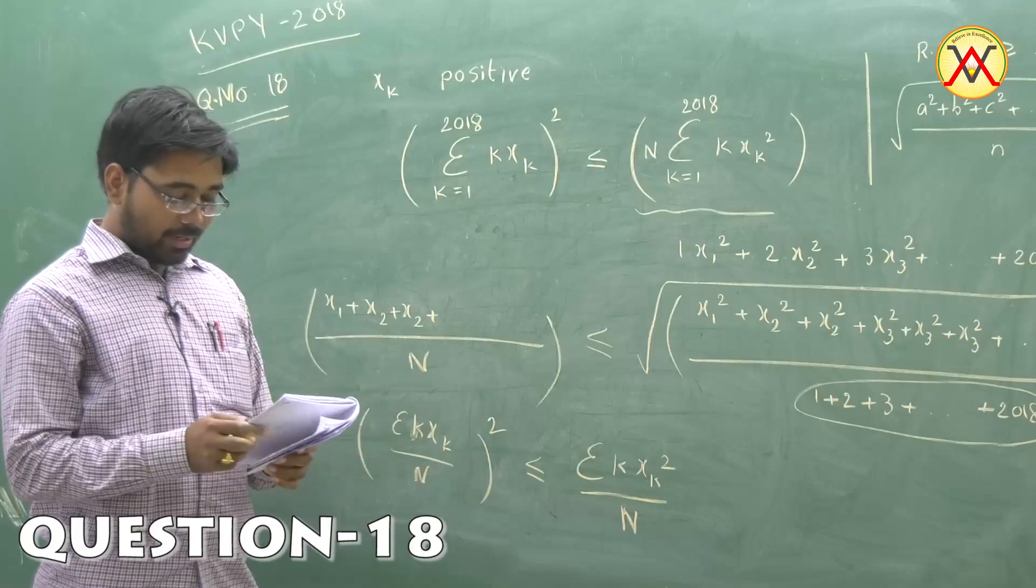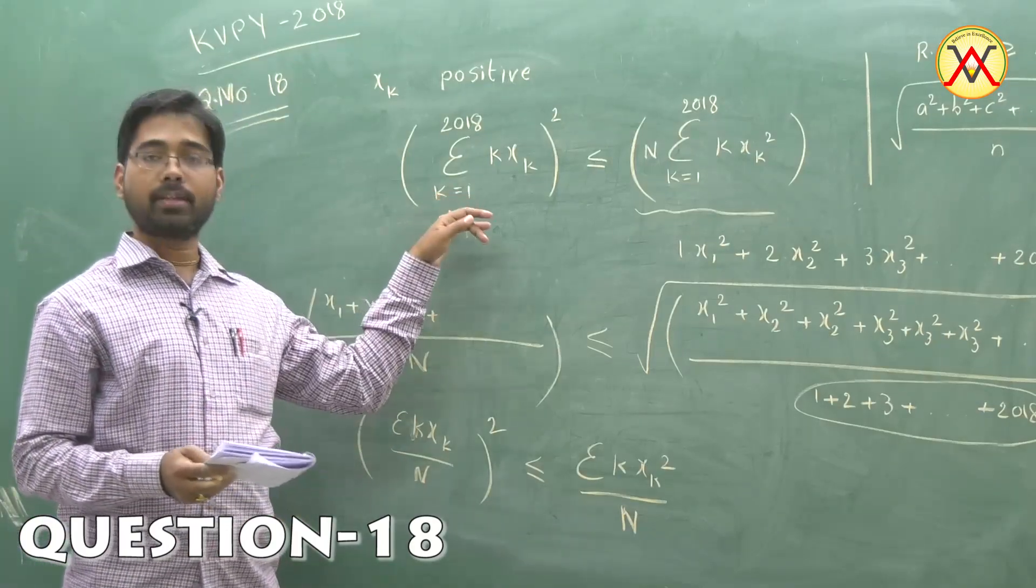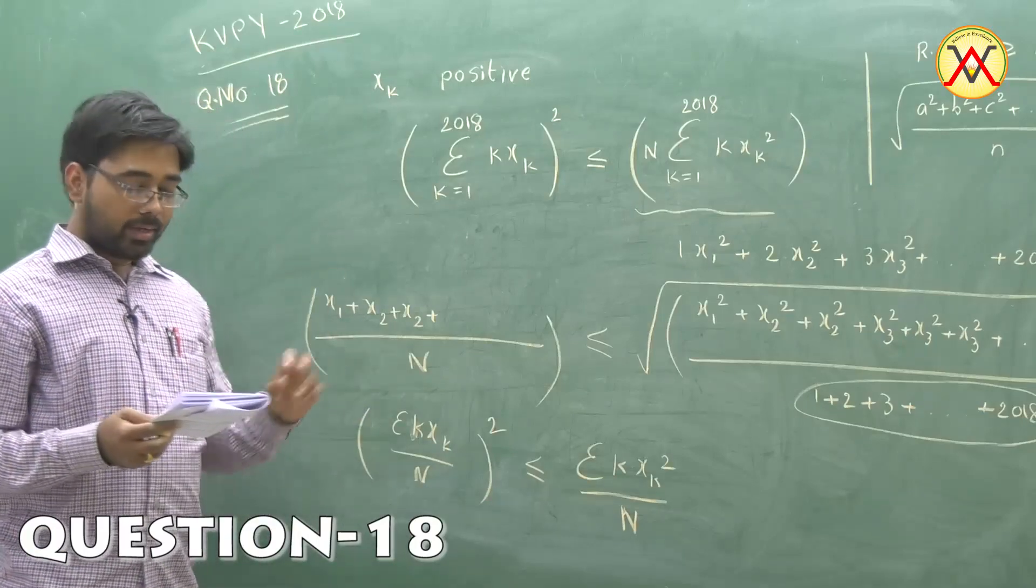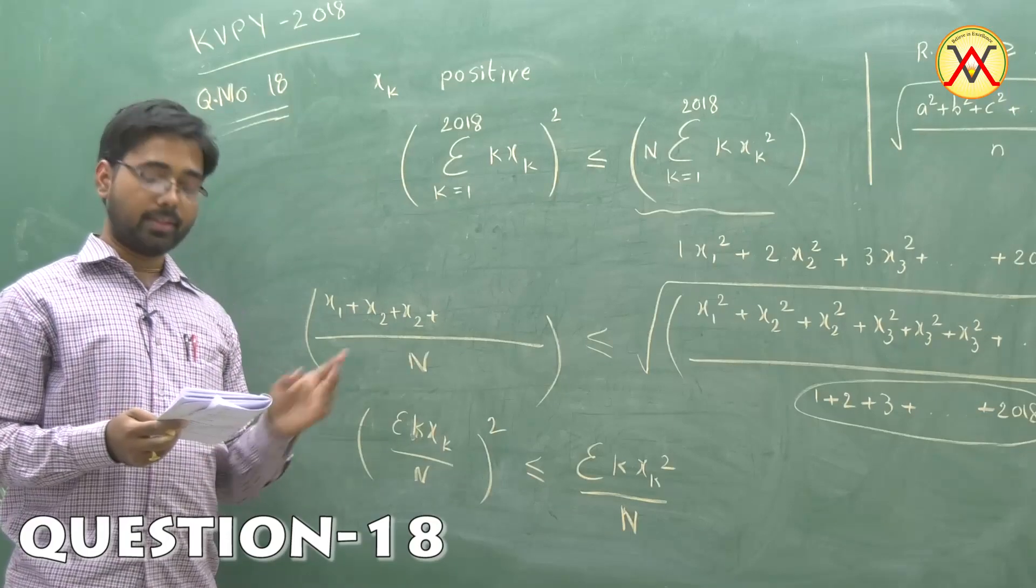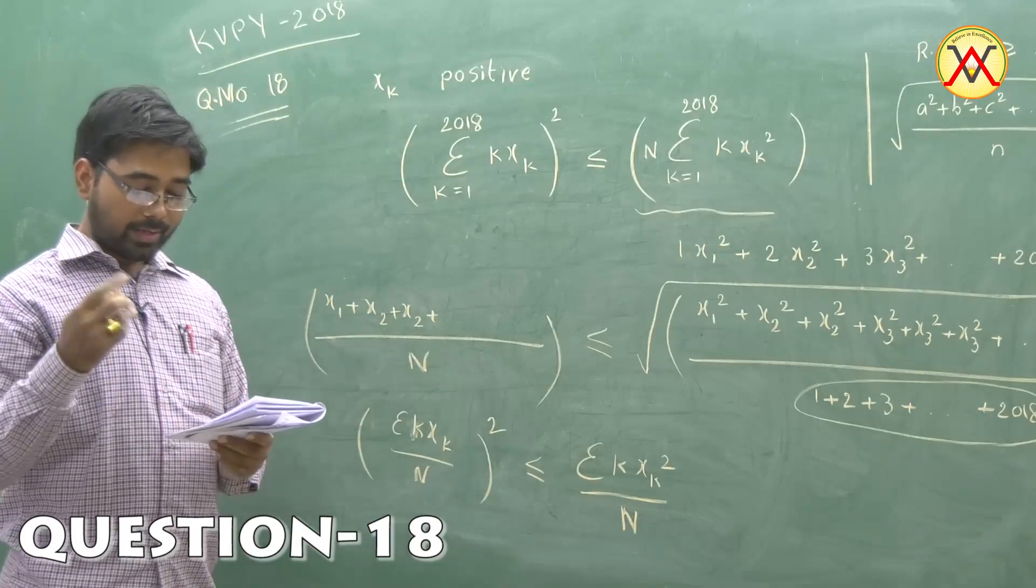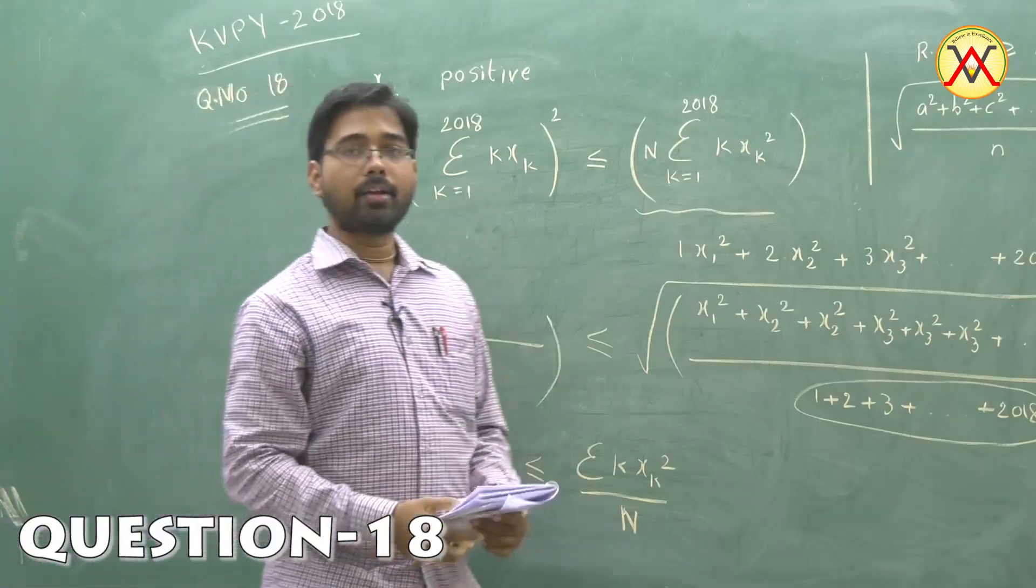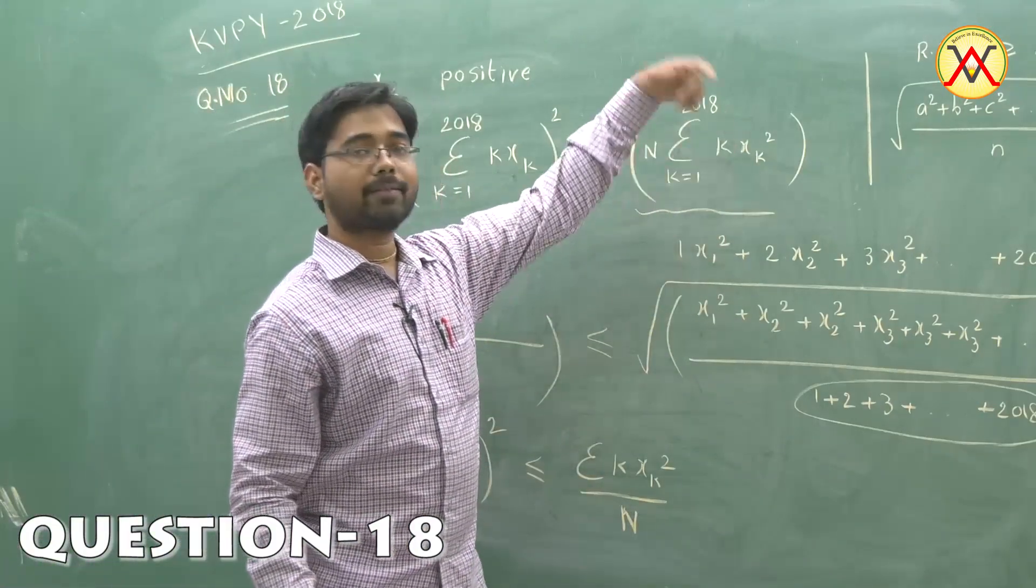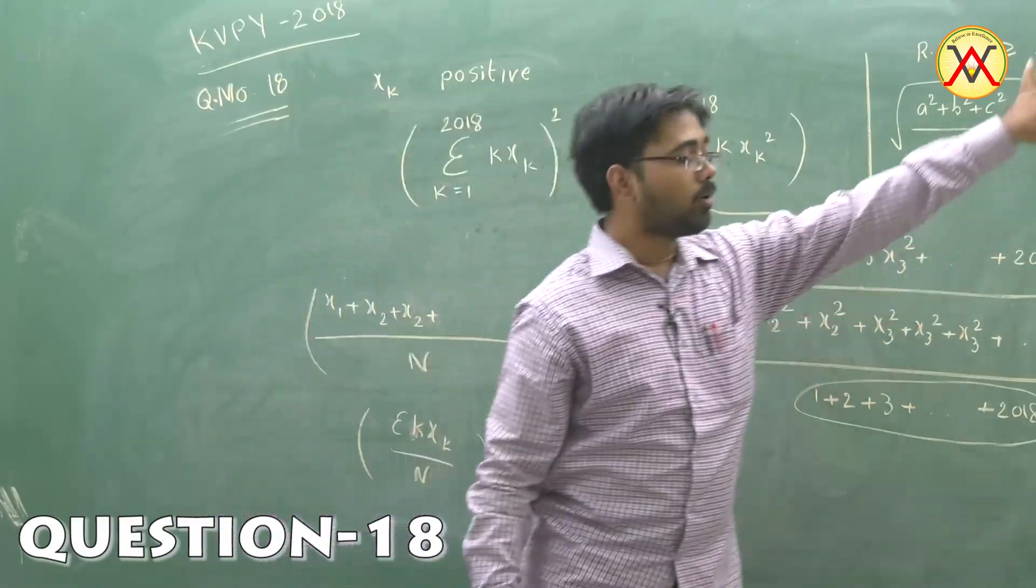The second inequality is obvious from the first because in both inequalities, the left-hand part is the same. The right-hand part has been increased further because in inequality 2, k has been made k².